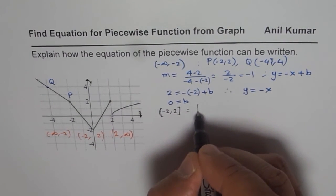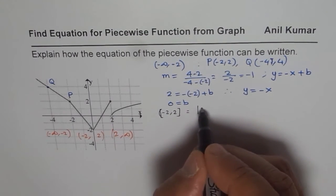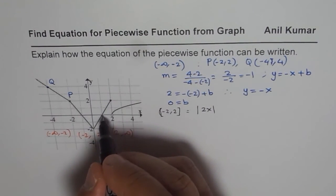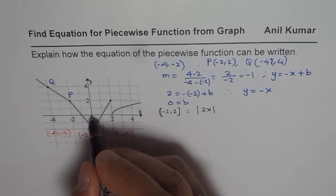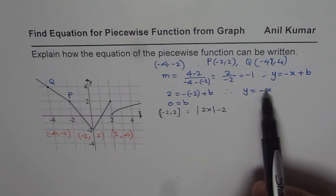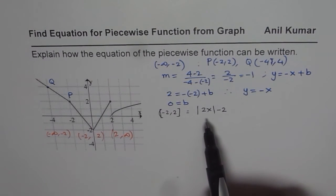We could write this as absolute value of 2 times x. Since absolute function has a slope of 2 here, and it moves two units down. So we could write minus 2. Or you could again do equation of a line and get your equation.